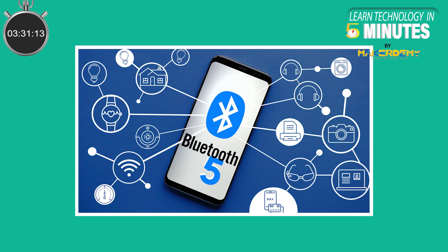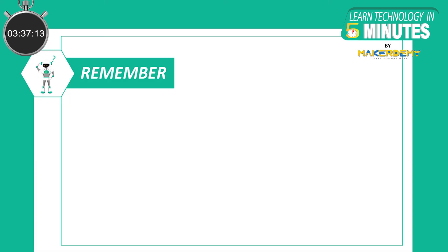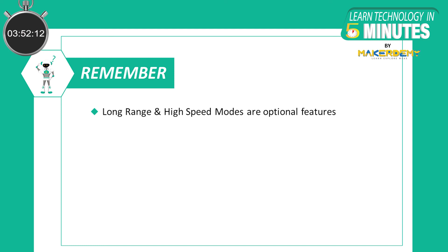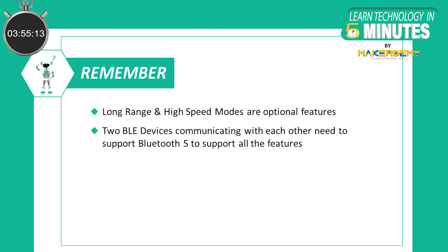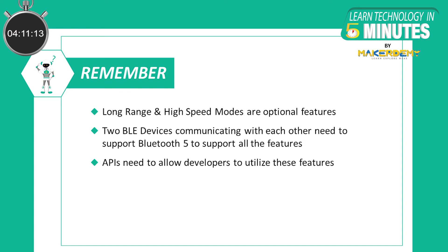As we can see, Bluetooth 5.0 introduced a few features that can be applied to a wide range of potential IoT applications. However, there are a few important key points to keep in mind. First, the new long-range and high-speed modes are optional features per the official Bluetooth specification, so a chipset or device that claims Bluetooth 5 support may not support either of these new modes. Second, to utilize these new features, the two BLE devices communicating with each other need to both support Bluetooth 5.0 and the feature of interest. Third, smartphones are still slow to support Bluetooth 5.0 and its new features — even when the new hardware supports it, the APIs need to allow the mobile developer to utilize these features.